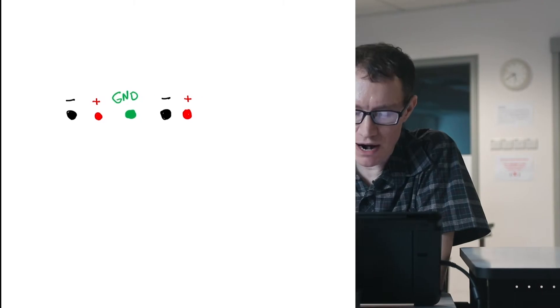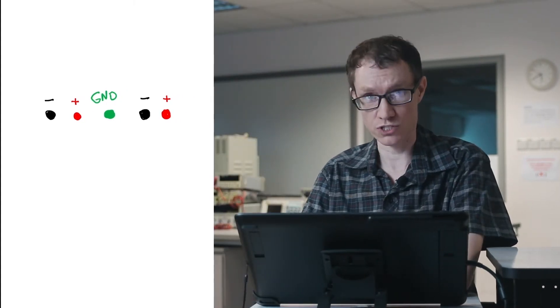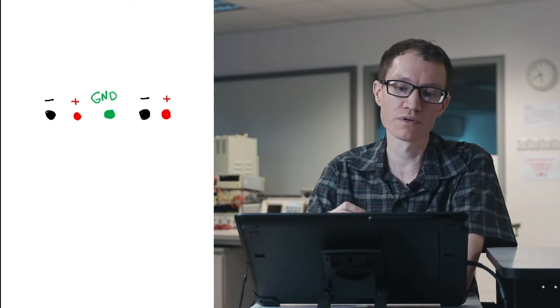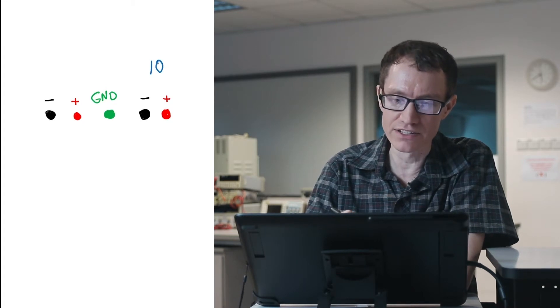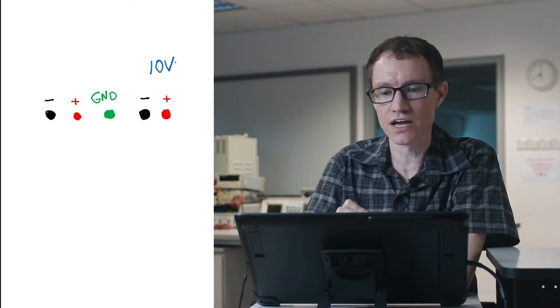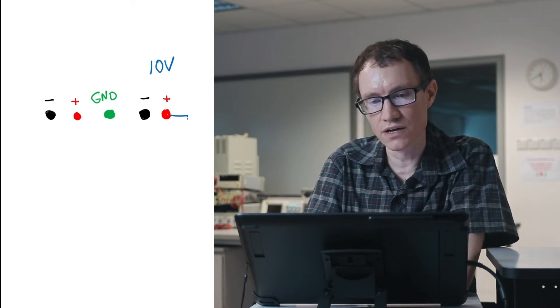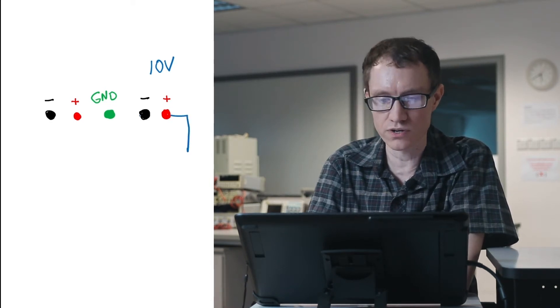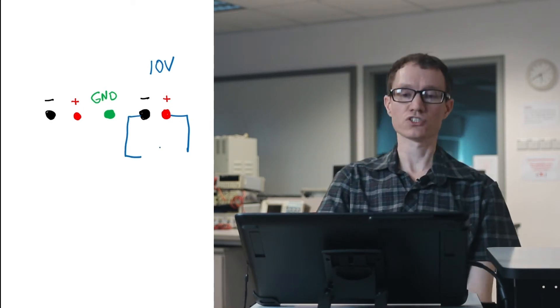These particular power supplies are two-channel variable voltage sources. It means that you can dial in whatever voltage you want, and then it will be displayed on the screen. So for example, if I dial in 10 volts, it means that there's now going to be a 10-volt difference between the red port and the black port right there on the channel to the right.